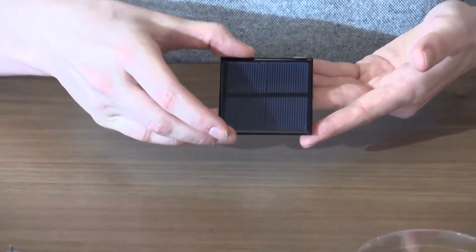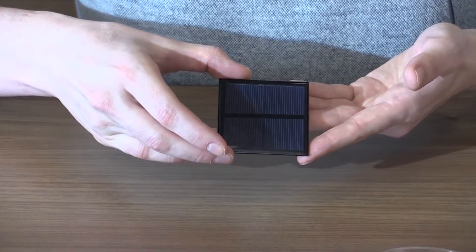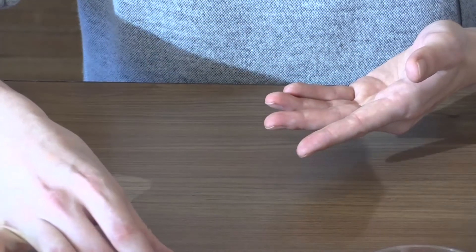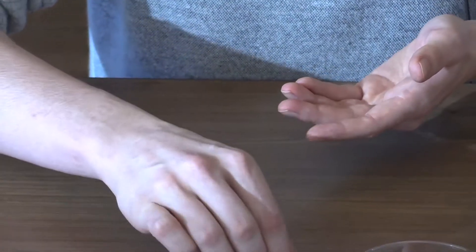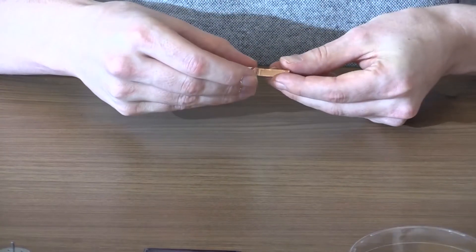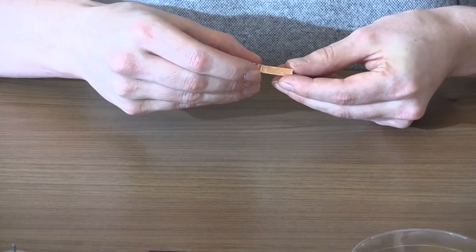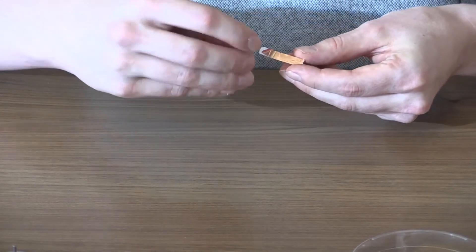We'll have our solar panel, which is going to provide us the electricity for our motor. We have two pieces of copper tape, which will allow us to attach the wires to our solar panel.